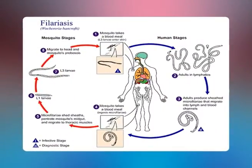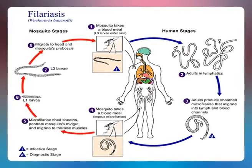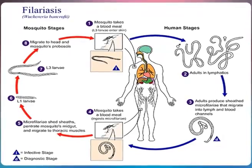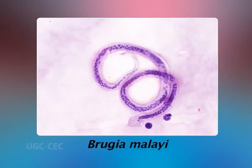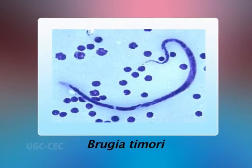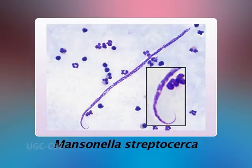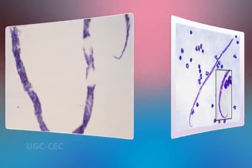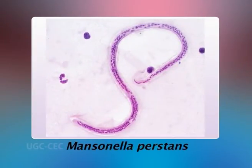Infection with any one of the seven filarial worms may be called filariasis, but traditionally the term refers to lymphatic filariasis, caused by Wuchereria bancrofti or Brugia species. Human filariasis can be classified as: lymphatic (Wuchereria bancrofti, Brugia malayi, Brugia timori), subcutaneous (Loa loa, Onchocerca volvulus, Mansonella streptocerca), and serous cavity (Mansonella ozzardi, Mansonella perstans).